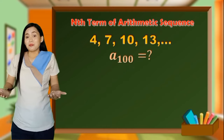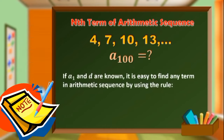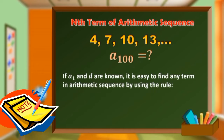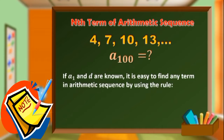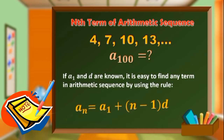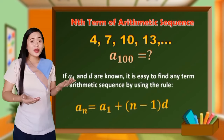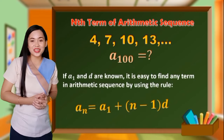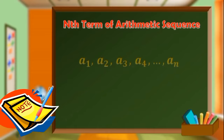So let's make this easy and simple by using a formula. If a sub 1 and d are known, it is easy to find any term in the arithmetic sequence by using this rule: a sub n is equal to a sub 1 plus quantity n minus 1 times d. And where did we get this formula? Well, let's derive it! An arithmetic sequence forms like this, where a sub n is equal to the nth term, and the subscript n refers to the number of terms.